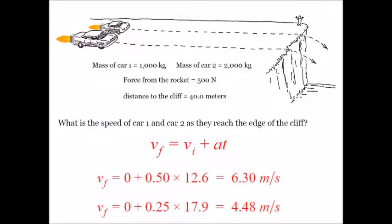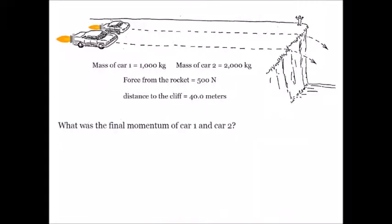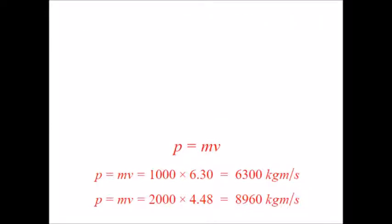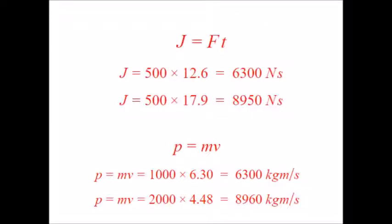Next question: the final momentum of car one and car two. P equals MV — momentum is mass times velocity — so mass times final velocity for each car. These momentum values make us very happy because they match what we found earlier with impulse. With a little bit of rounding, impulse really does equal change in momentum.